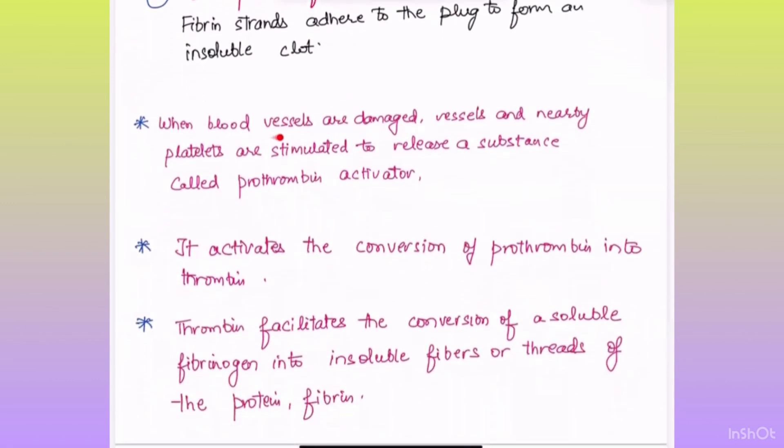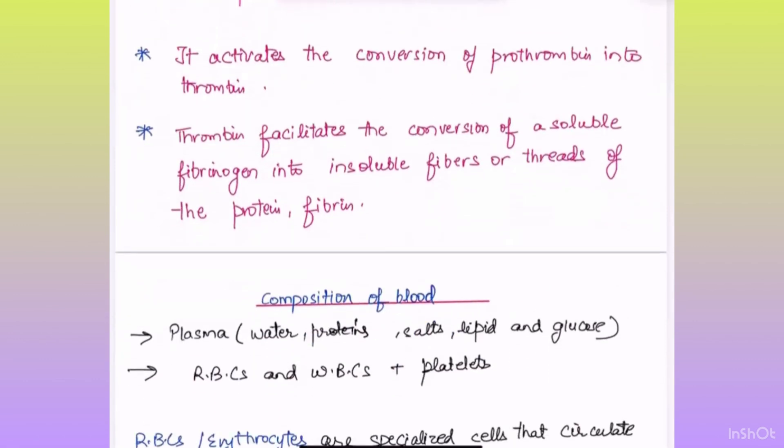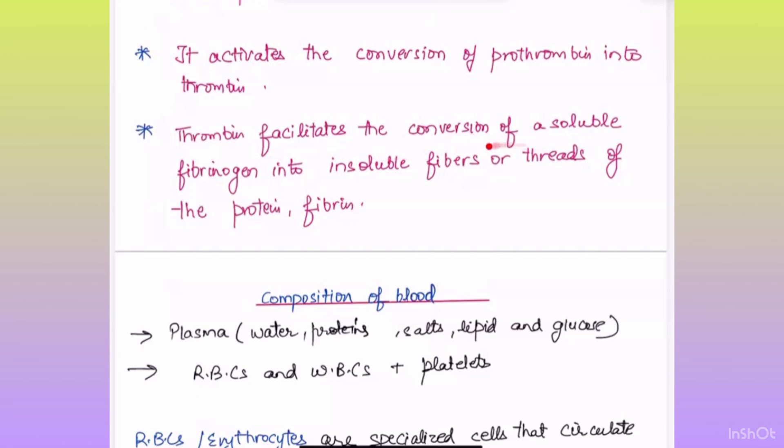When blood vessels are damaged, vessels and nearby platelets are stimulated to release a substance called prothrombin activator. It activates the conversion of prothrombin into thrombin and thrombin facilitates the conversion of a soluble fibrinogen into insoluble fibers or threads of the protein fibrin.